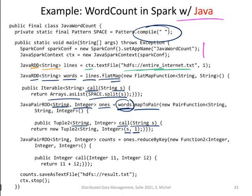Now we are reducing it. We take the RDD 'ones' and apply reduceByKey, which takes the key — the String — and applies a function on the values. This function takes two integers and returns their sum. So we are summing up the ones, as we did in the MapReduce reduce step. Finally, we save the information as a text file into HDFS named results.txt, and then stop the computation by calling stop on the context object.